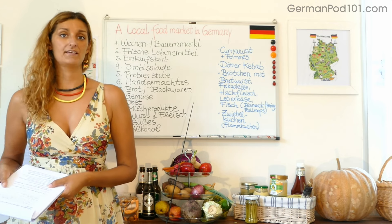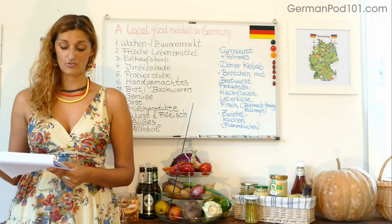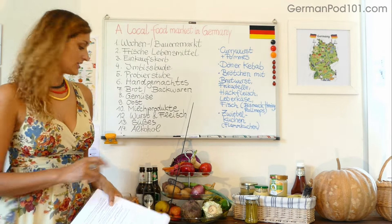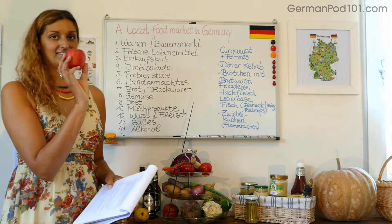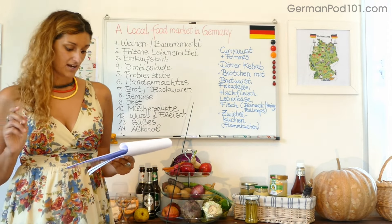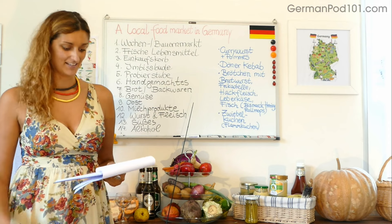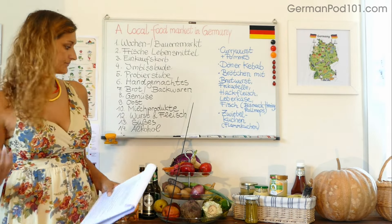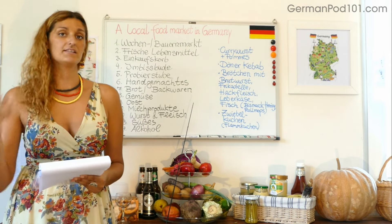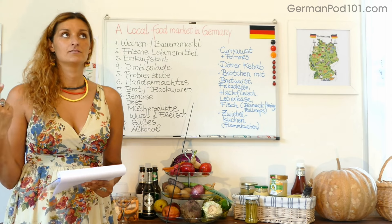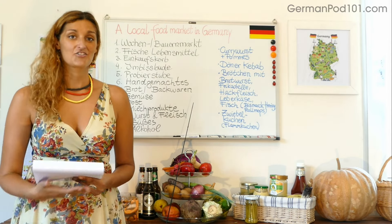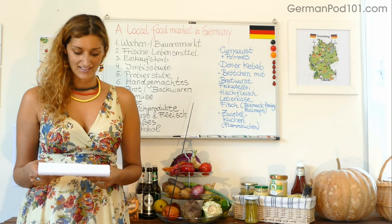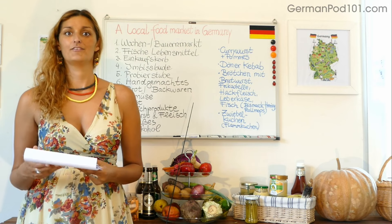Welches Obst und Gemüse kommt denn aus Deutschland und wird lokal geerntet? Das ist meine Quizfrage Nummer 5. Am meisten wird in Deutschland der Apfel geerntet — Äpfel werden ungefähr 1,1 Millionen Tonnen in Deutschland geerntet. Andere Obstsorten sind dann natürlich Birnen, Pflaumen, und alle möglichen Sorten von Beeren — zum Beispiel Erdbeeren, Himbeeren, Heidelbeeren, Johannisbeeren, Stachelbeeren, Sanddorn und auch Kirschen. Baumobst ist also das Obst, was am meisten in Deutschland geerntet wird.